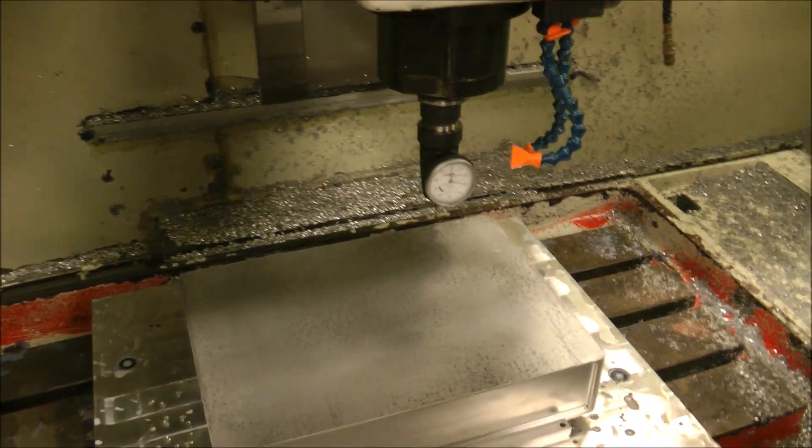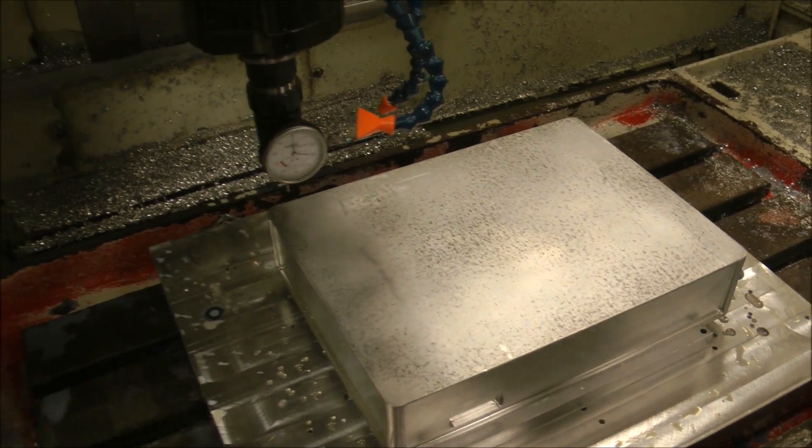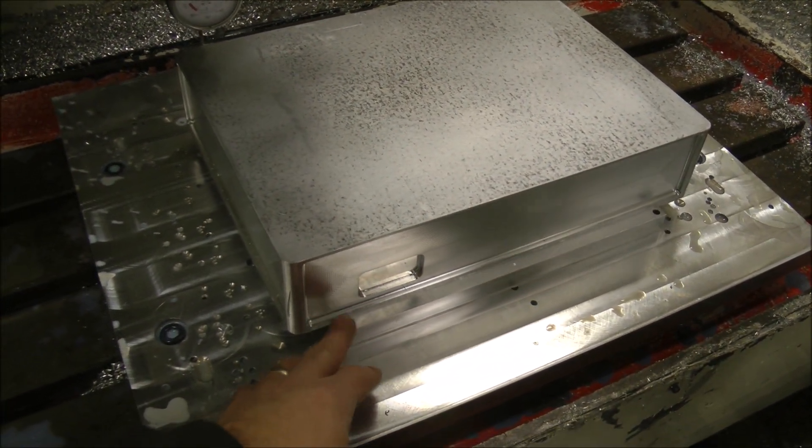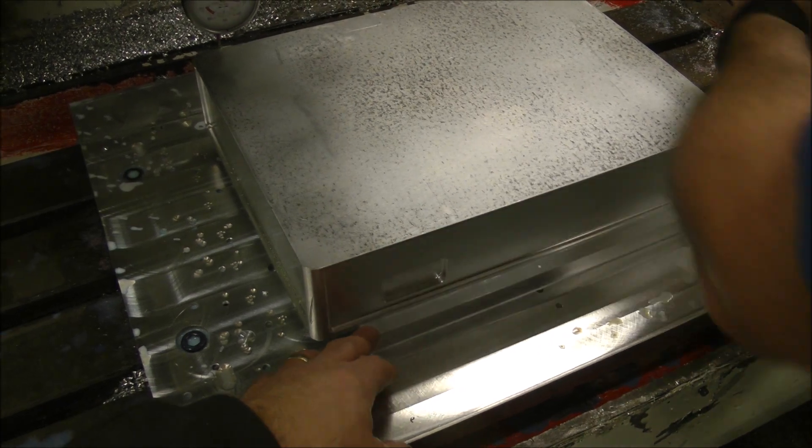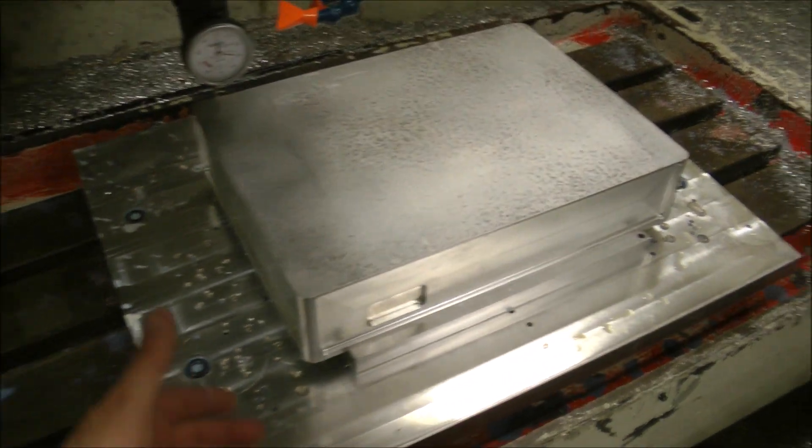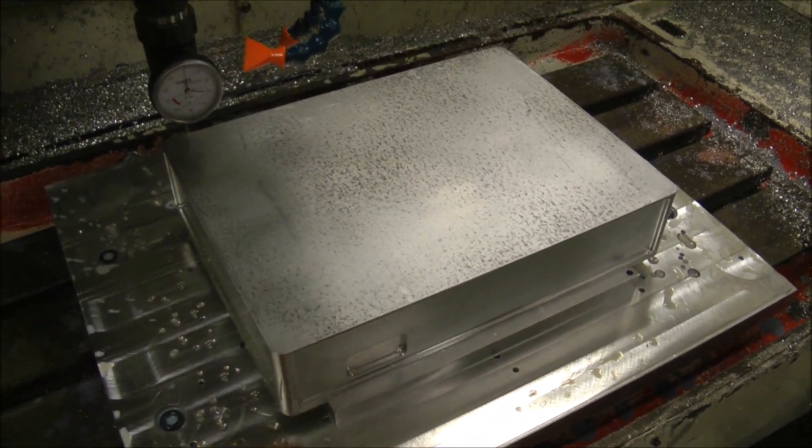Alan's getting ready to start the machining operation to hollow out the power distribution box. He's doing some last minute checks, but the interesting thing is that the first thing the team had to do was come up with a holding system to hold this in a way that would leave it freed up to do all the side and front operations and yet keep it perfectly square.